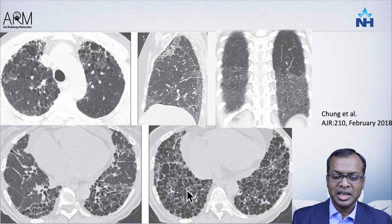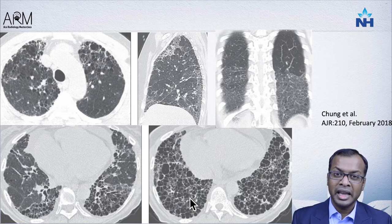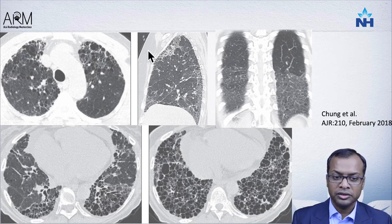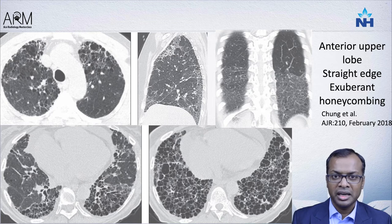Another scenario is when you see extensive honeycombing with what is called a straight edge sign — where abnormal lung parenchyma suddenly transitions to normal lung above it. There is also exuberant honeycombing, and a four-corner sign where honeycombing is seen in the anterior aspect of the upper lobes bilaterally — one, two, three, and four corners toward the lung bases. These features together suggest a UIP pattern underlying connective tissue disease, so investigate for CTD whenever you see this.